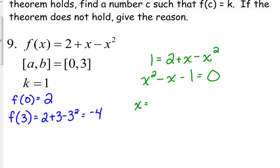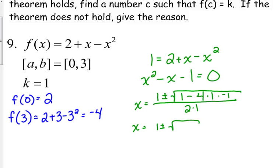x equals negative b. Well, b is already negative 1, so that becomes positive 1. Plus or minus the square root of b squared. Well, negative 1 squared is 1. Minus 4 times a, which is 1, times c, which is negative 1. All over 2 times a. If you don't have the quadratic formula memorized, add that to your list of things to do. So, 4 times 1 times negative 1 is negative 4. There's a minus sign in front of it, so that becomes plus 4. So, 1 plus 4 is 5. That's as much simplifying as we can do for this problem because 5 is not a perfect square. It's got to stay under the square root.